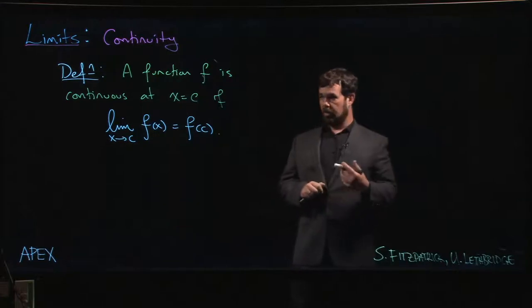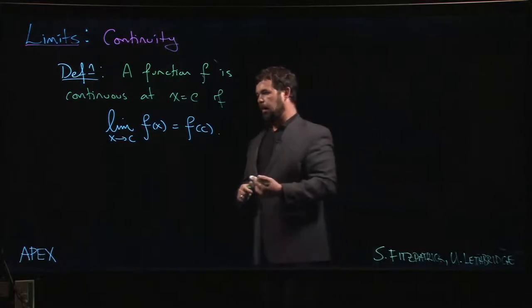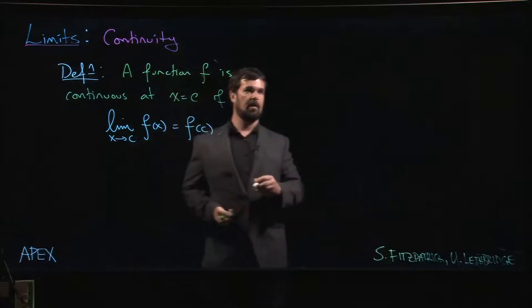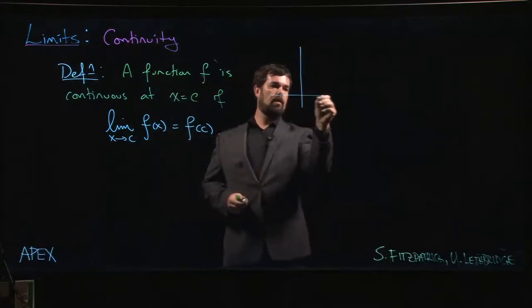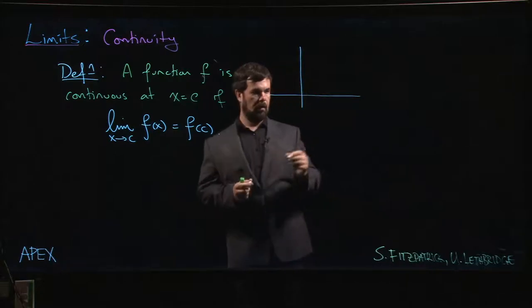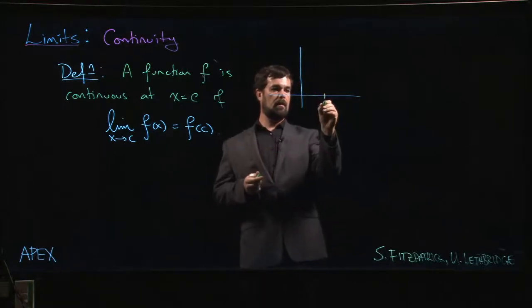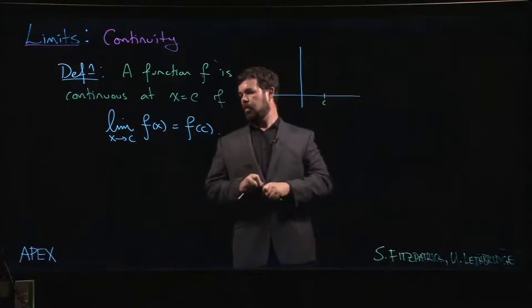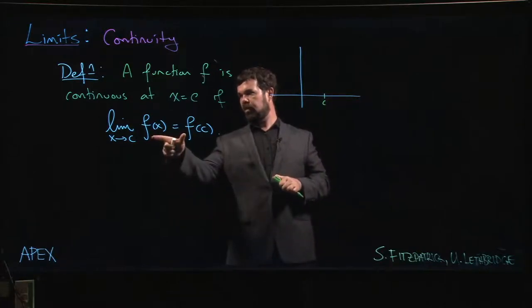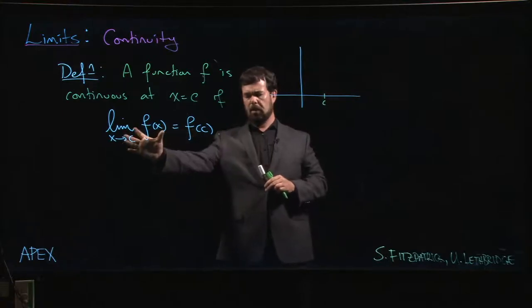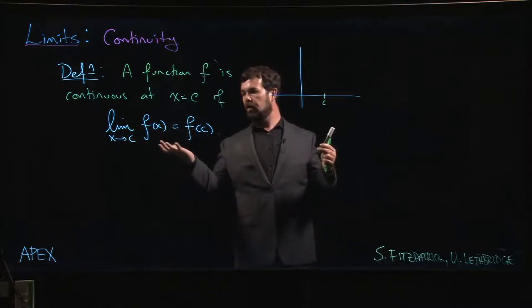Now you can extend this to continuity on intervals, but let's stop and think for a second about what this is saying. Being continuous at a point—let's say c is here—basically the definition of continuity at a point is telling you that two numbers are equal.